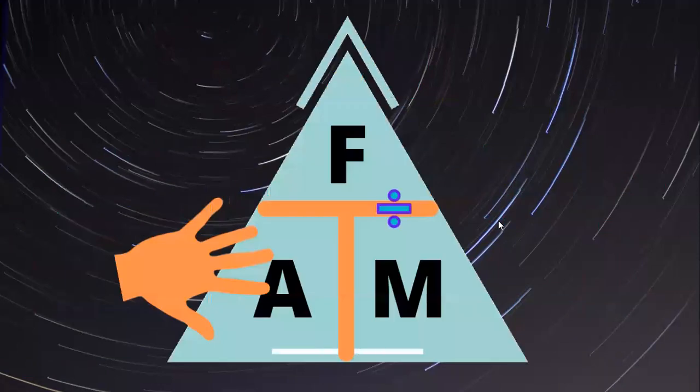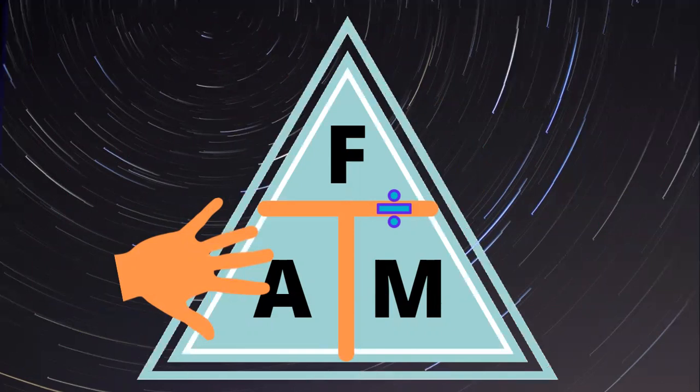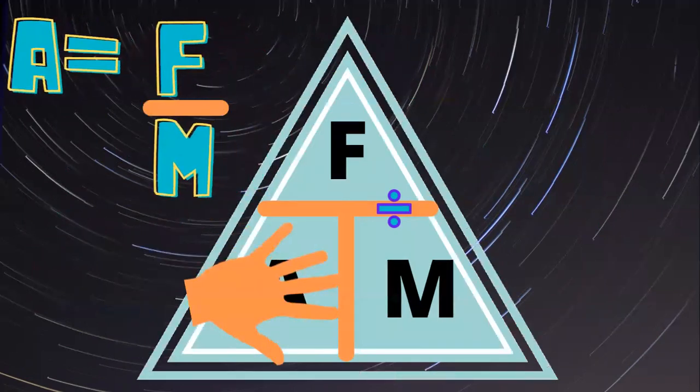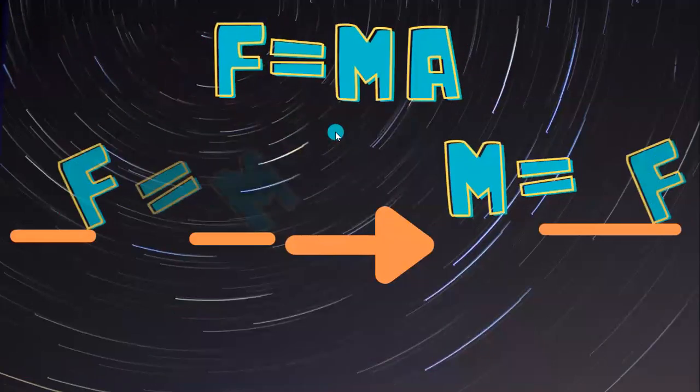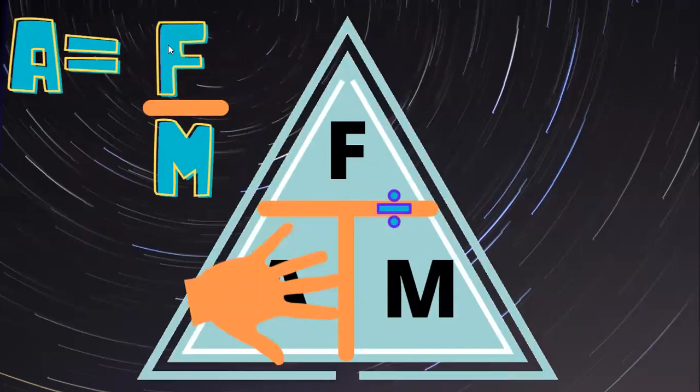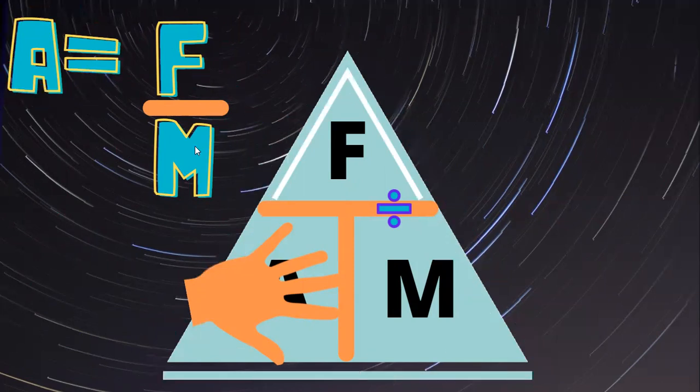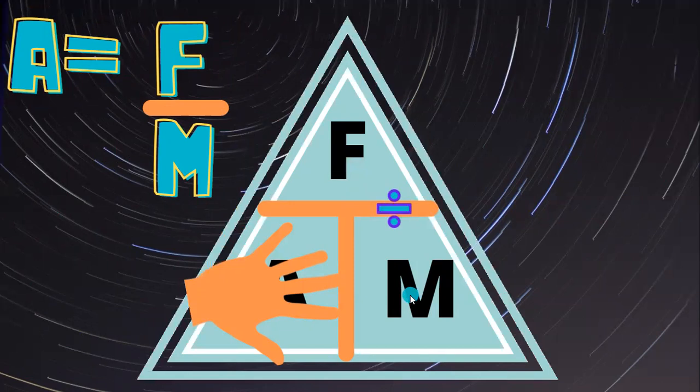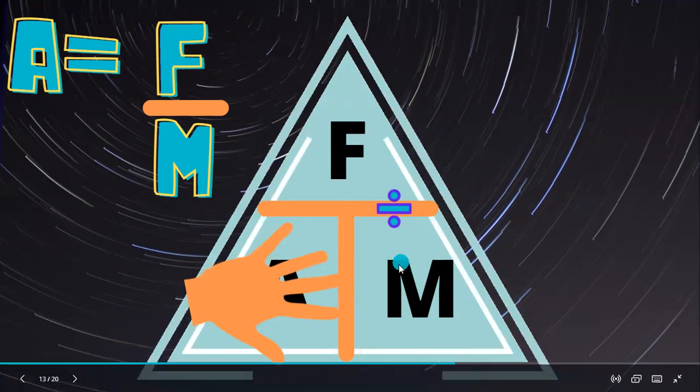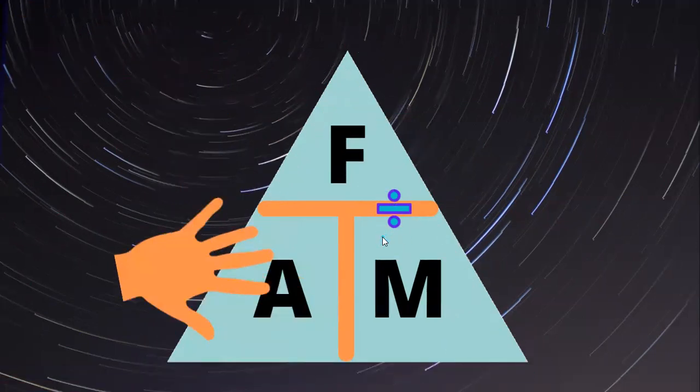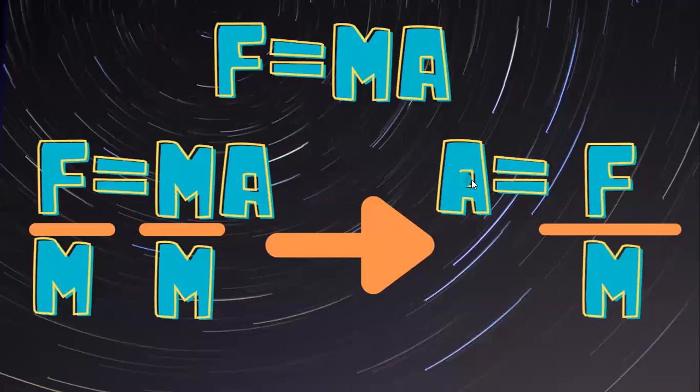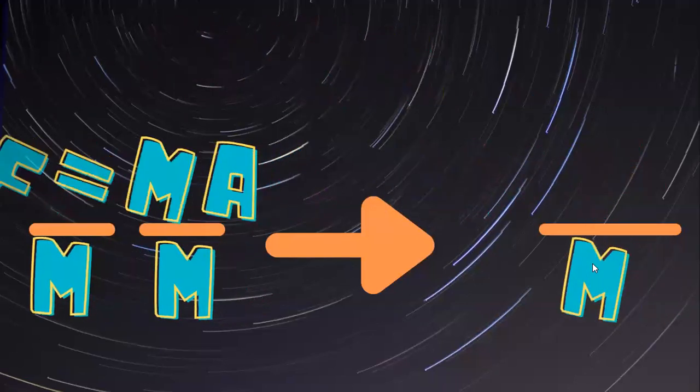And what that leaves us with is A equals F over M. So these cancel each other out. So we have A equals F over M. So let's go back to our triangle. So if I do not know acceleration, I'm going to take my hand and I'm going to cover up that A. And we then see that acceleration, the thing we didn't know, equals F divided by M. So here we have F divided by M. So these that are up and down, we divide; across, we multiply. So if we don't know A, we divide F divided by M or force divided by mass, which is exactly what we saw in A equals F divided by M.